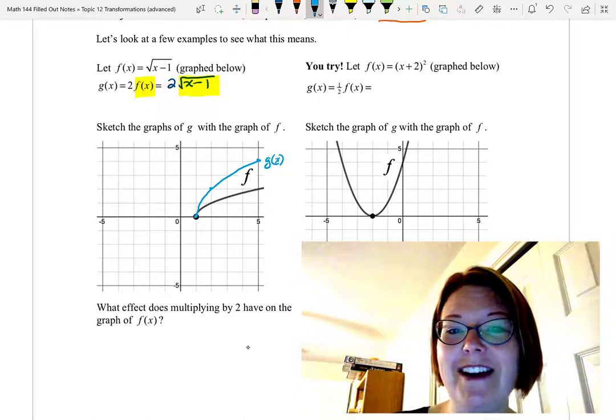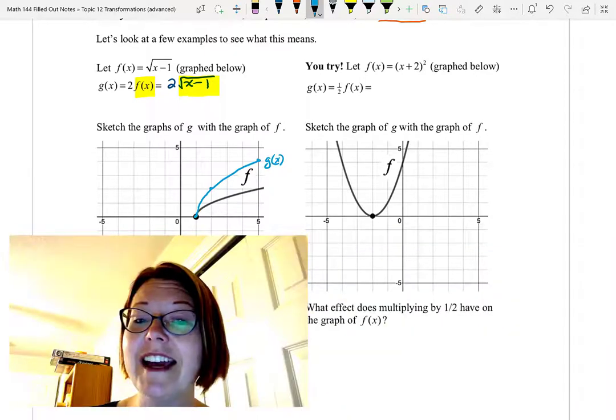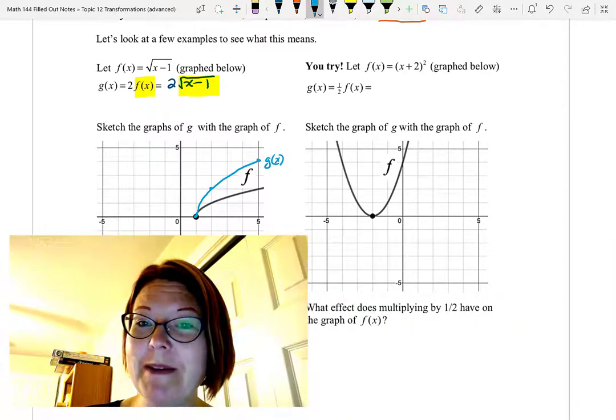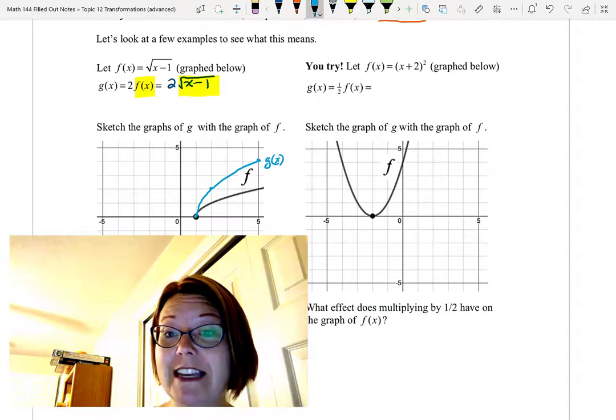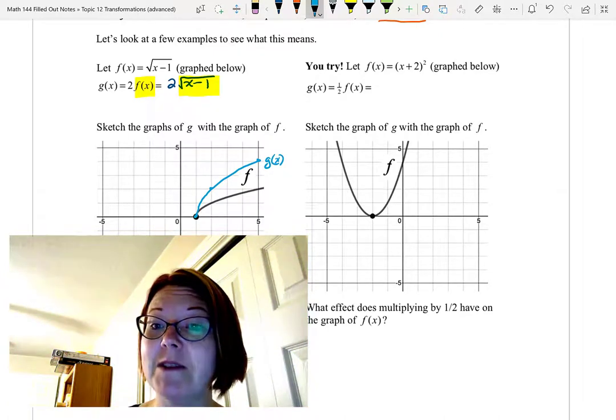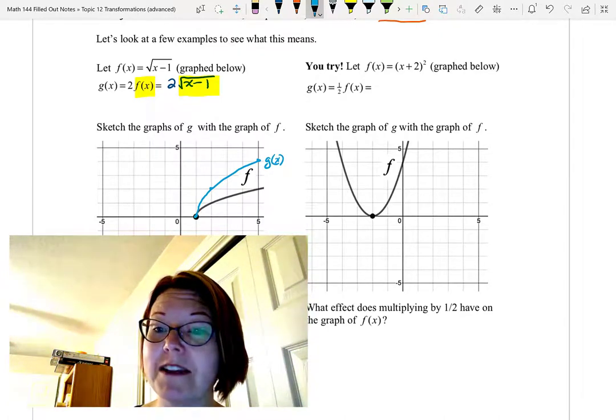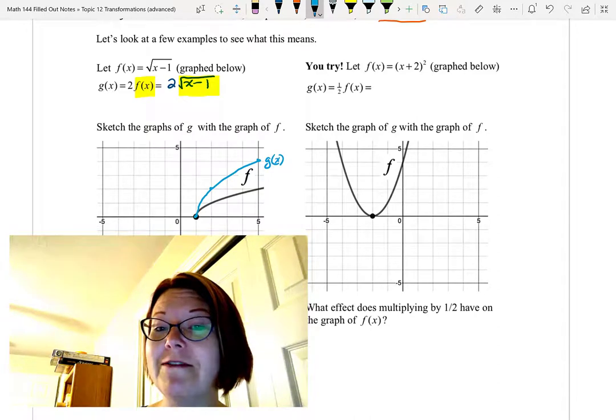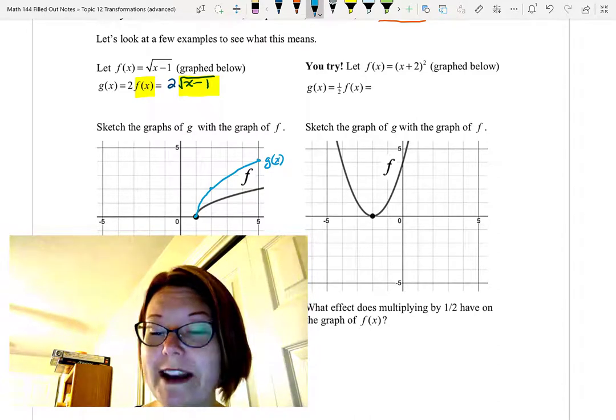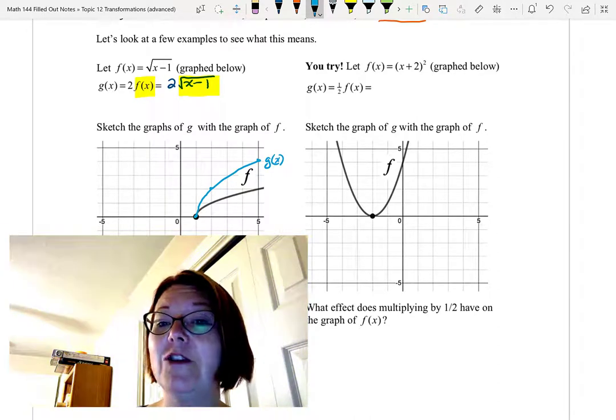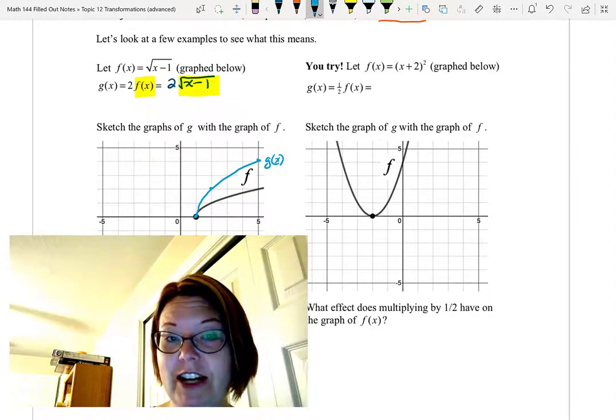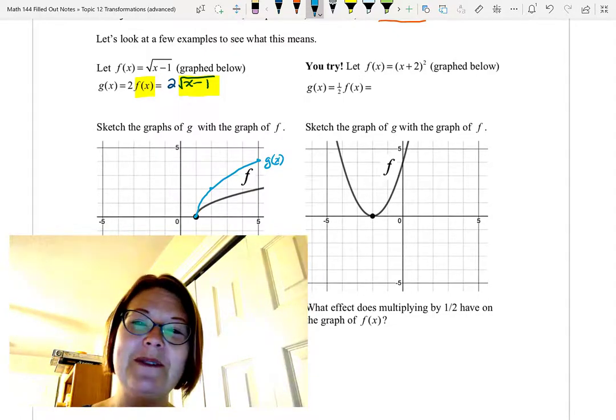I'd like you to try the next problem. f(x) equals, in parentheses, x plus 2, and then out of the parentheses squared. You're going to find g(x) equals 1 half of f(x), graph it, and describe the change. So pause this video and give that a try.